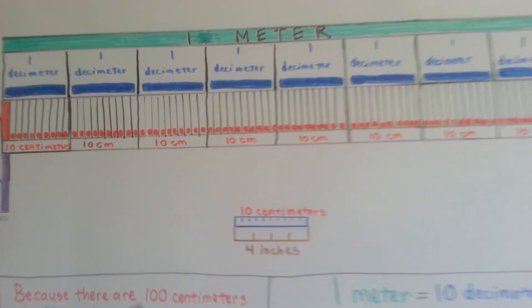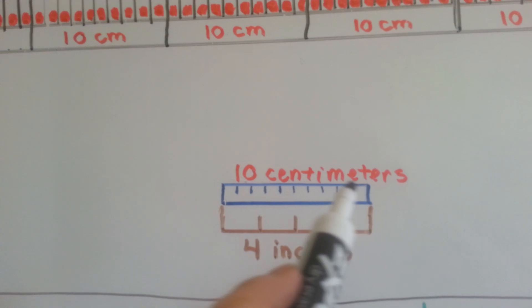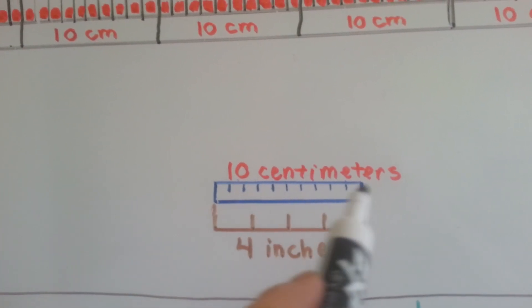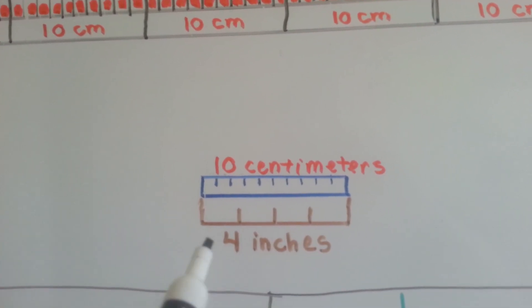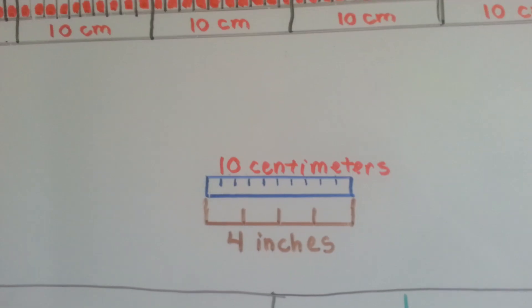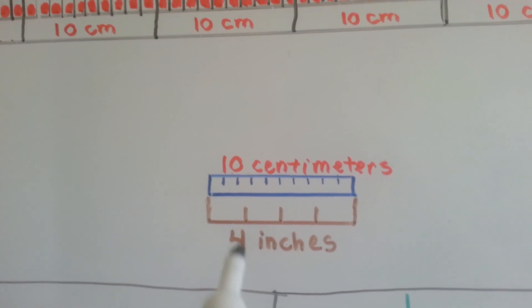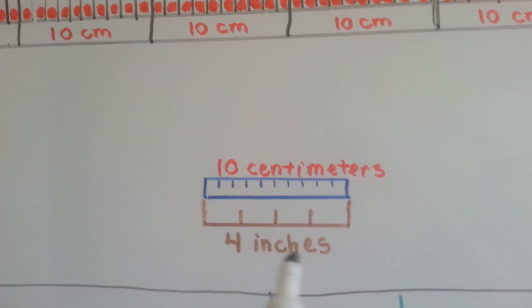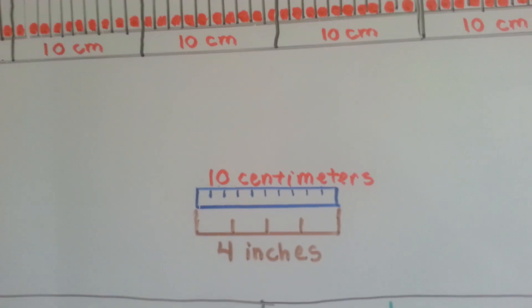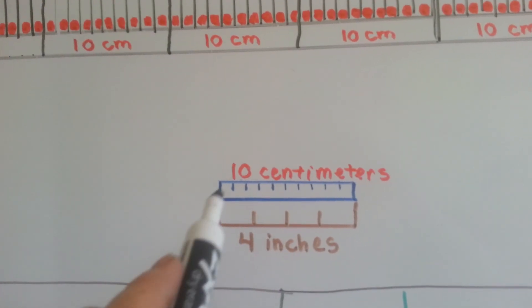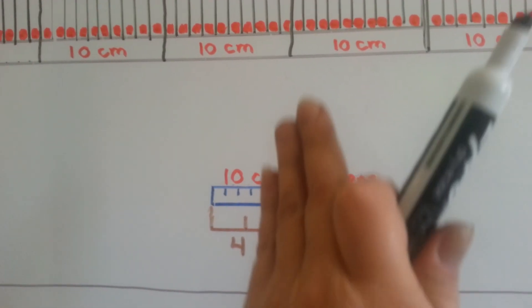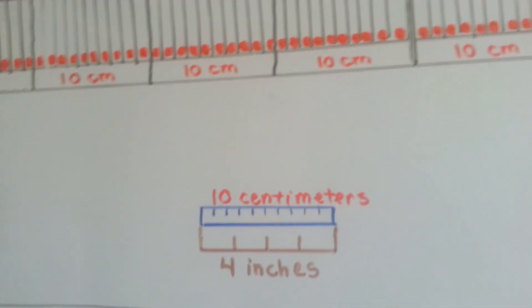If you look right here, this is ten centimeters. Actually ten centimeters. I measured it. And look, four inches is about ten centimeters. So if you know what inches are and you understand the size of inches, you can see where the centimeters are. There's about two and a half roughly to each inch.